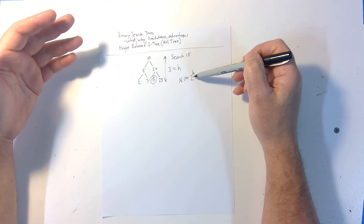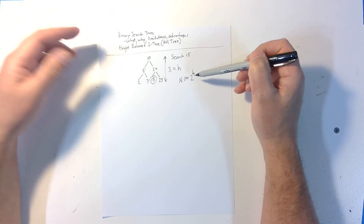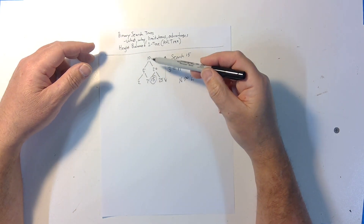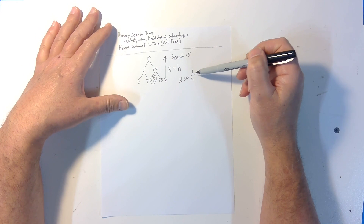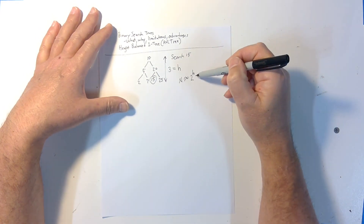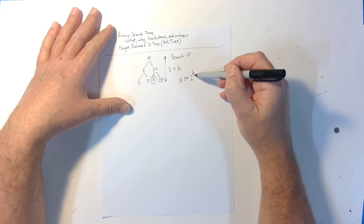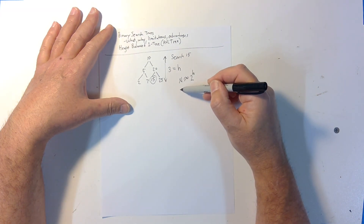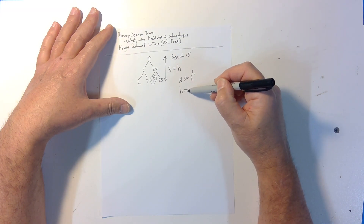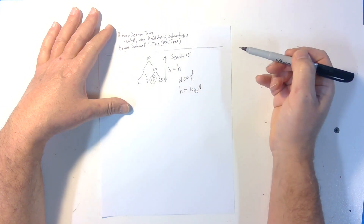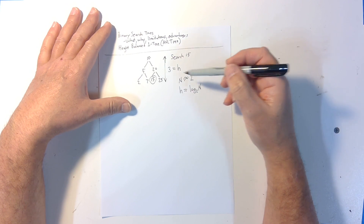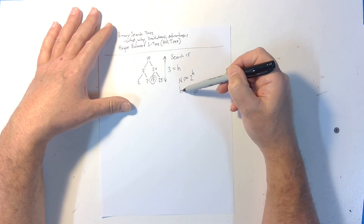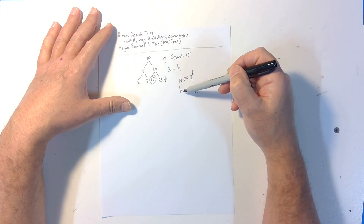This tree is three levels high and has seven nodes, which is almost exactly 2 to the 3, which is eight. So a search operation is the inverse of this — the height of the tree is log base two of n. You can have a really big n and the height is not going to be that large.